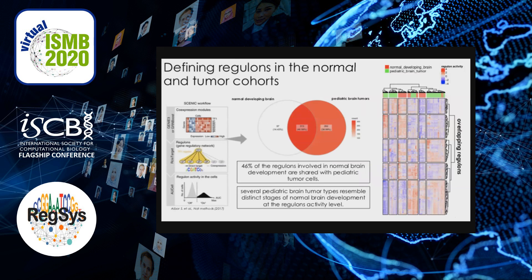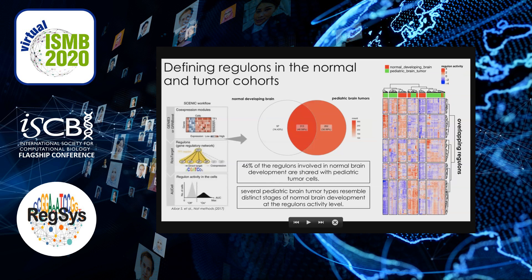Our first step in this approach is to define the regulatory modules that characterize the normal and the tumor cohorts. We've used the CNIC workflow, which starts by inferring co-expression modules between transcription factors and candidate target genes. CNIC then identifies modules for which the regulator's binding motif is significantly enriched across the target genes, creating regulons with only direct targets and discarding indirect targets from co-expression inference. The last step is to score the activity of each regulon in each sample.